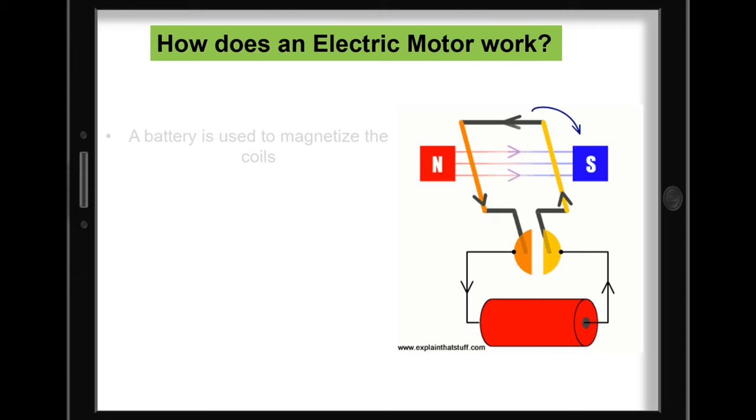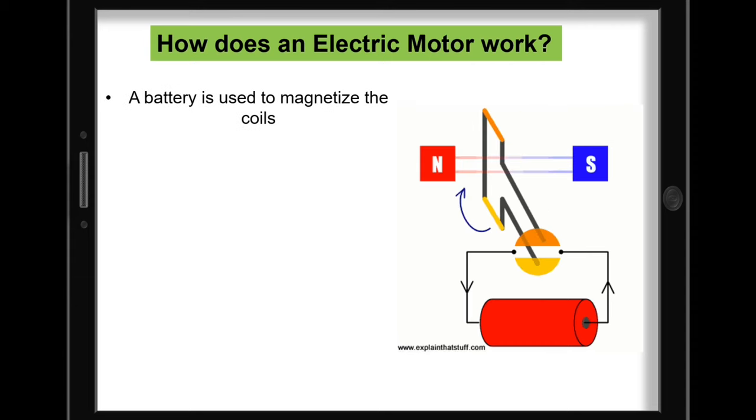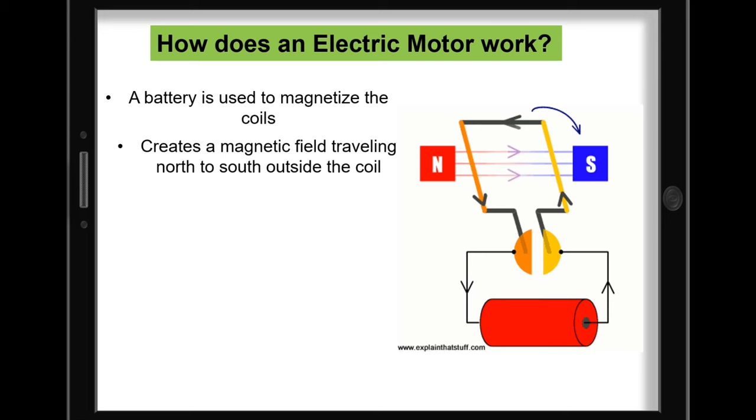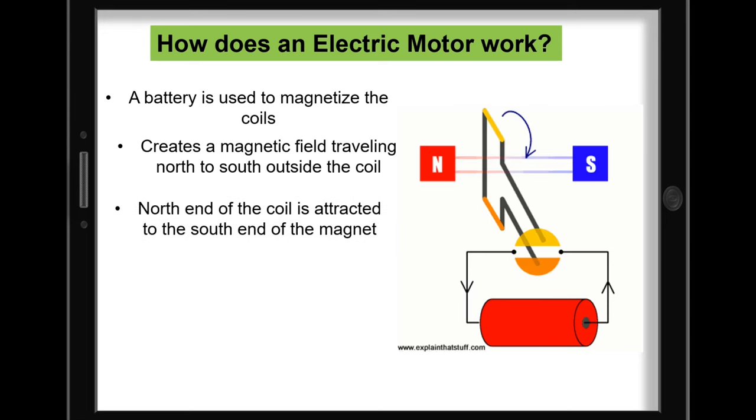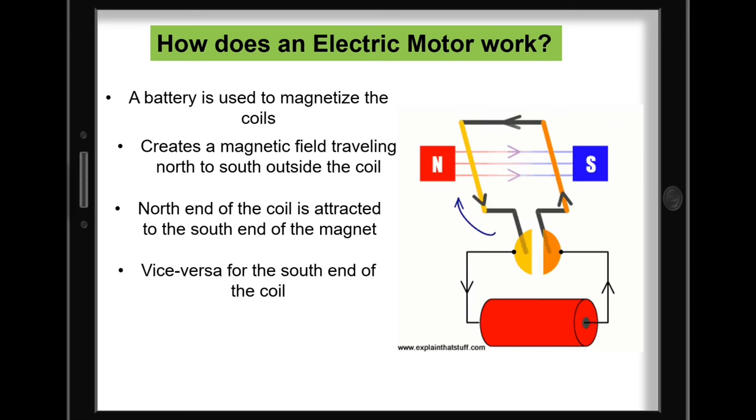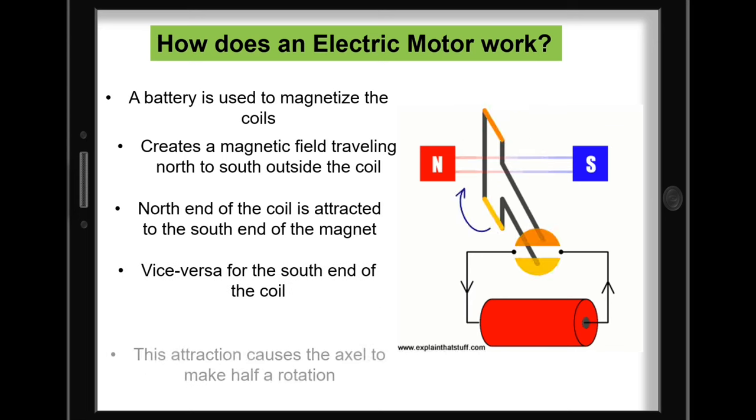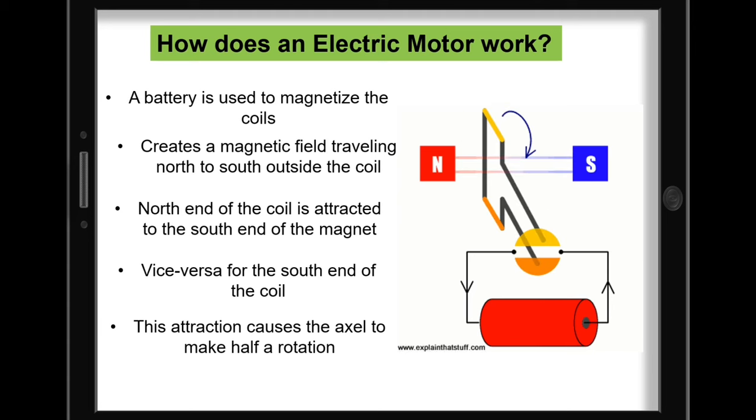A battery is used to magnetize the coils, creating a magnetic field traveling north to south outside the coil. The north end of the coil is attracted to the south end of the magnet, and vice versa for the south end of the coil. This attraction causes the axle to make half a rotation.